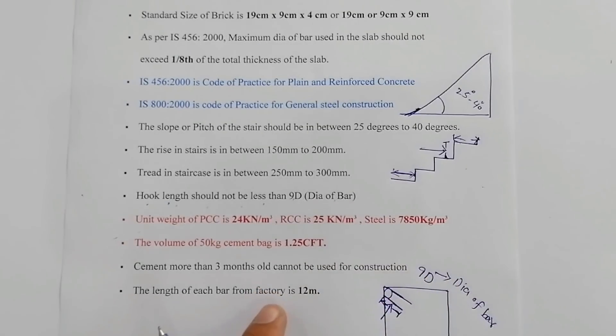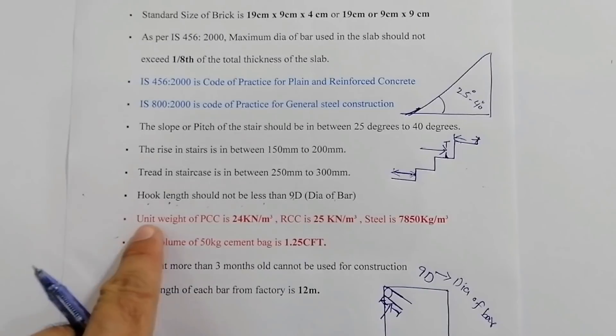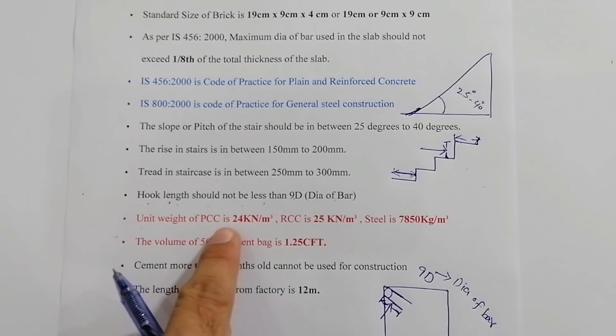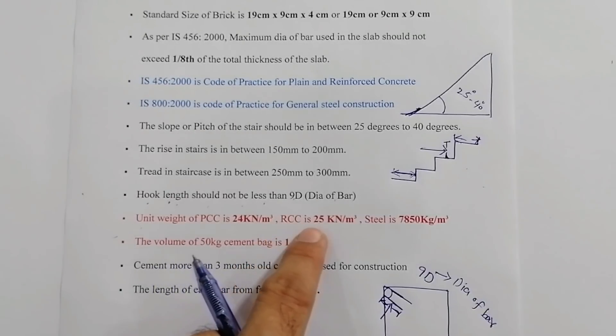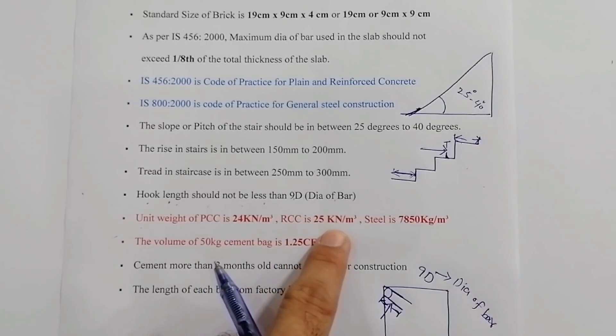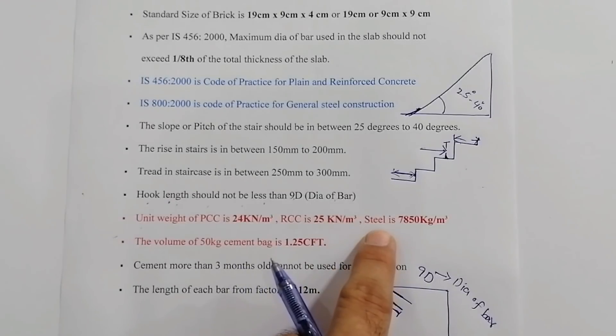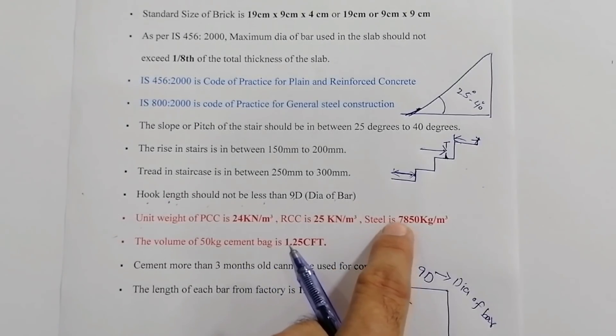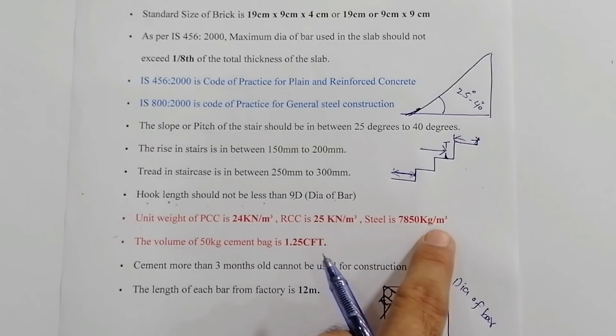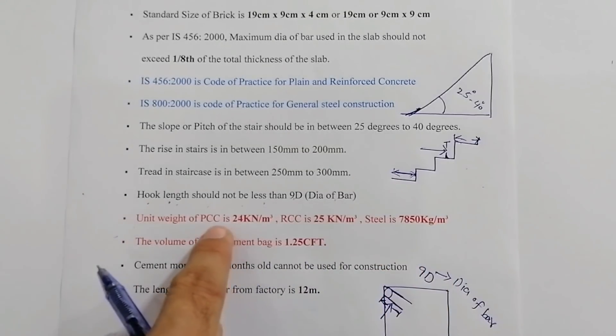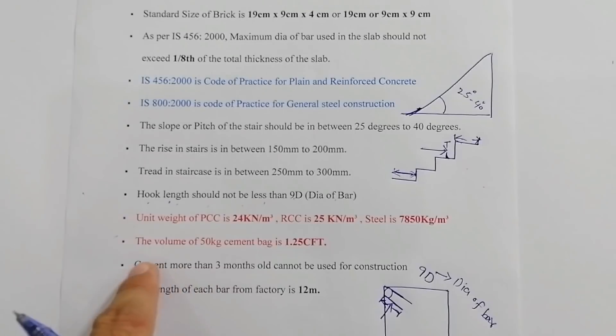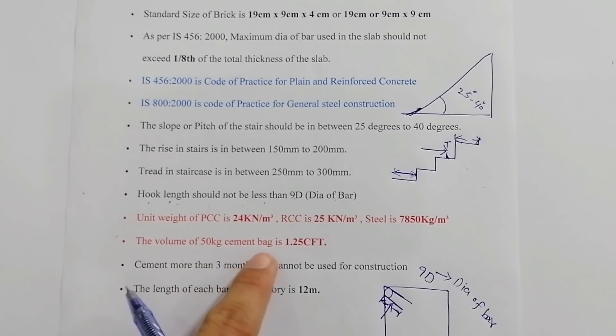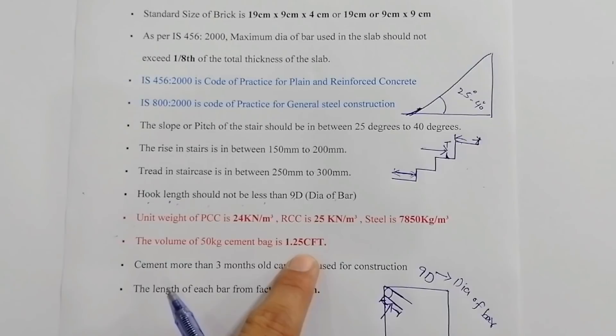Unit weight of PCC is 24 kN/m³ or per cubic meter. For RCC, reinforced concrete weight or density is 25 kN/m³, and for steel is 7850 kg/m³. These are very important: PCC, RCC, and steel density or unit weight. And the volume of 50 kg cement bag is 1.25 cubic feet.